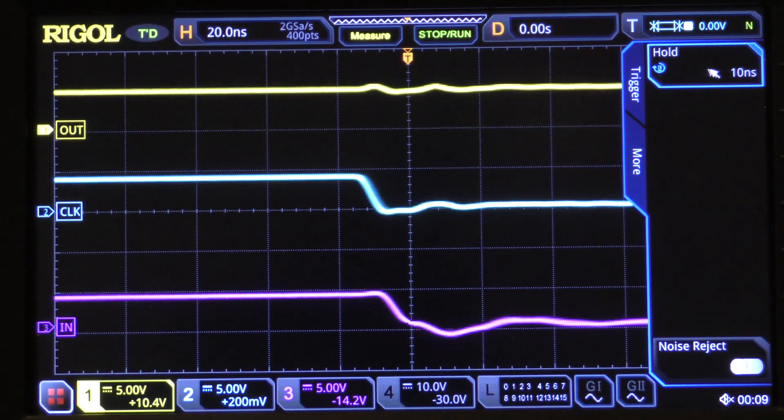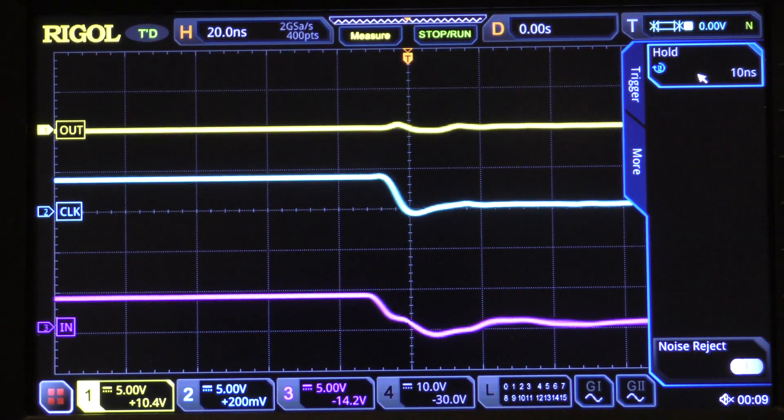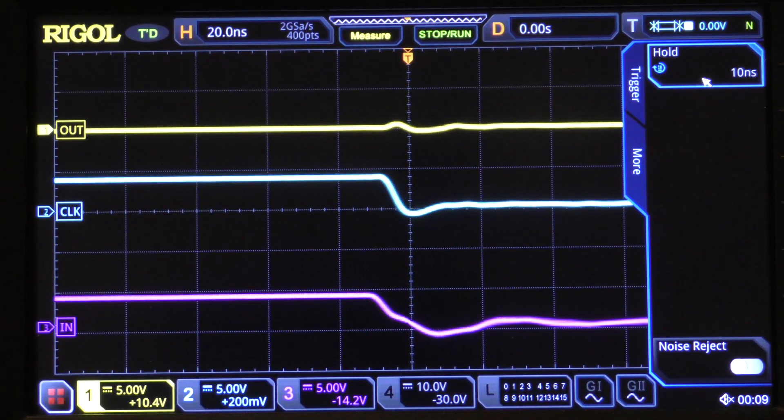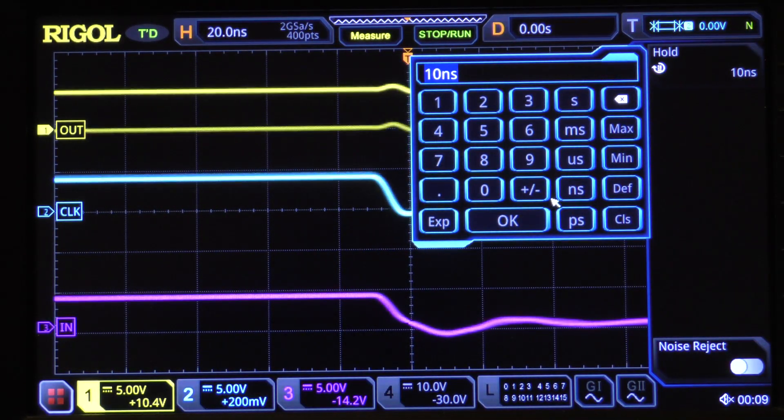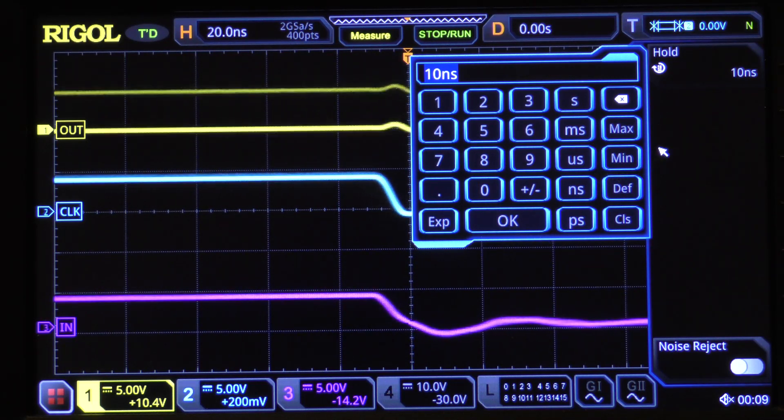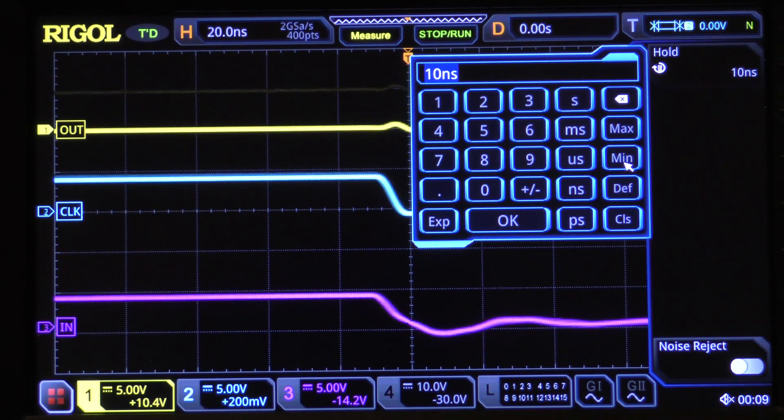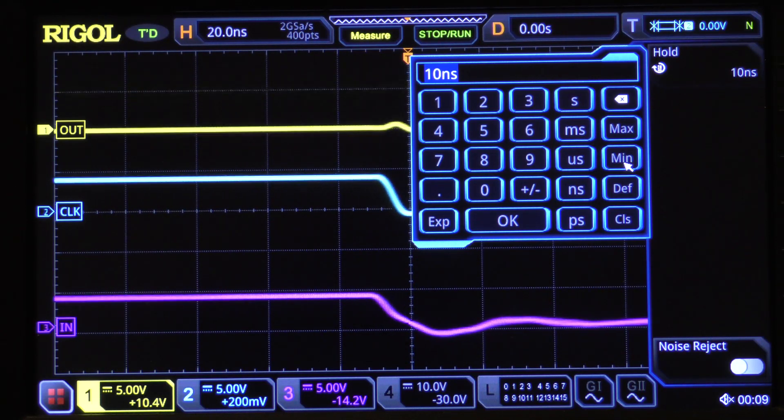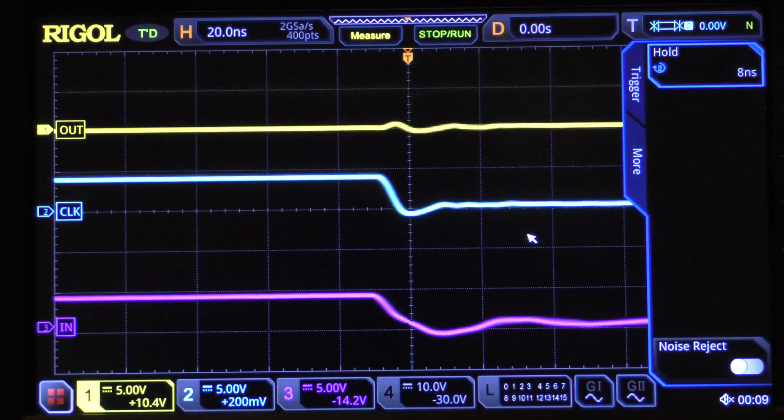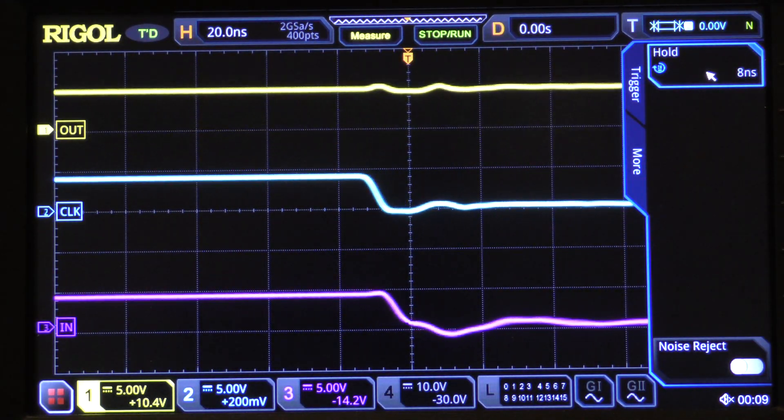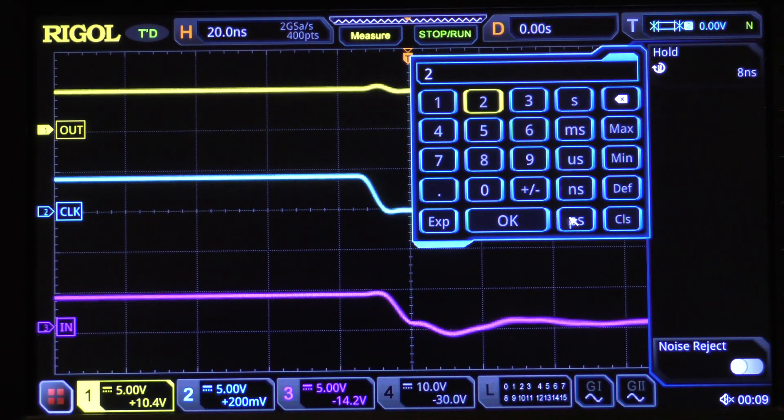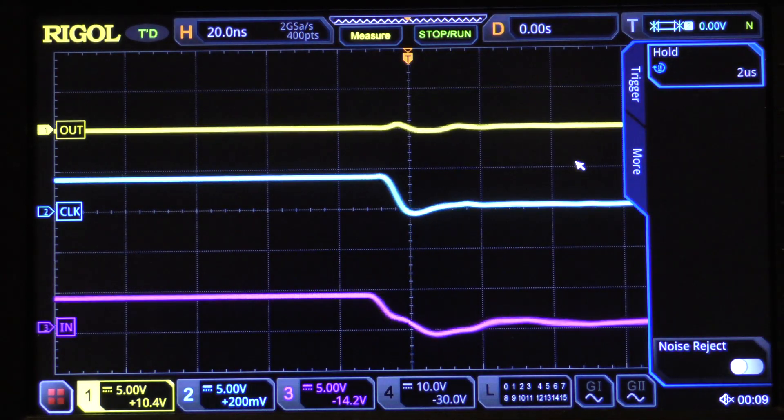And it then allows us to say what is the allowable hold time. So we click on that and this comes up. We're using 10 nanoseconds. But suppose we want to use the minimum that the scope will handle. We'll click on min. Notice that it goes to 8 nanoseconds. And we click OK. In this case, that doesn't make any difference.